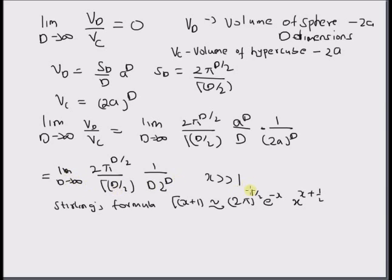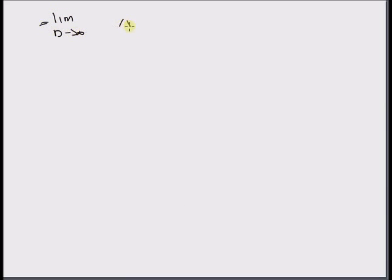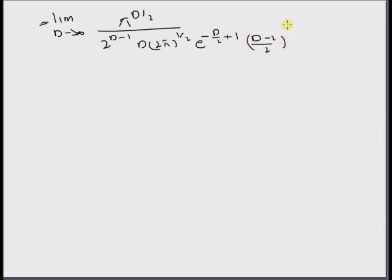So, gamma(d/2) = gamma((d/2 - 1) + 1). By applying Stirling's formula directly, we have the approximation: (2*pi)^(1/2) * e^(-(d/2 - 1)) * (d/2 - 1)^(d/2 - 1/2). Inserting this value into the expression for gamma(d/2), we get the limit as d tends to infinity of pi^(d/2) divided by [2^(d-1) * d * 2^(1/2)] times (d-1)^(1/2) * 2 * e^(-(d/2)+1) * (d-2)/2)^((d-1)/2).